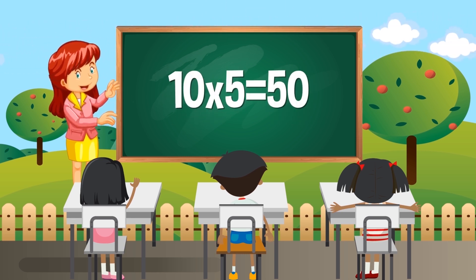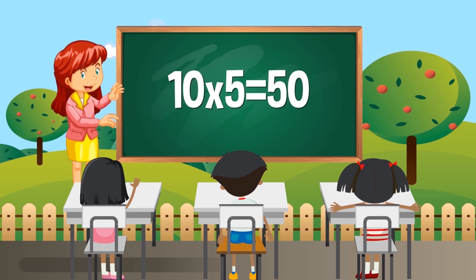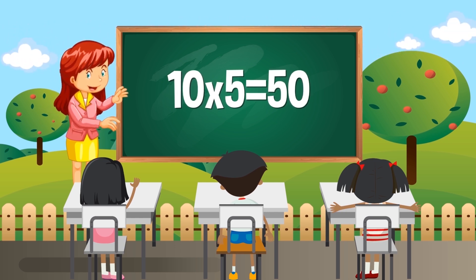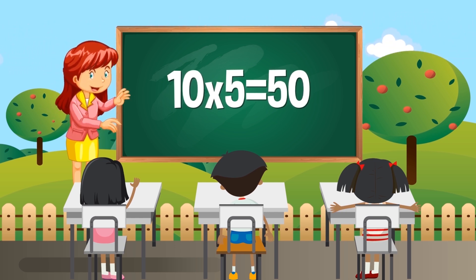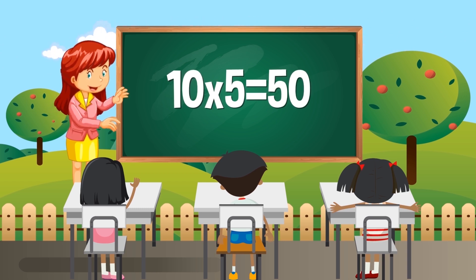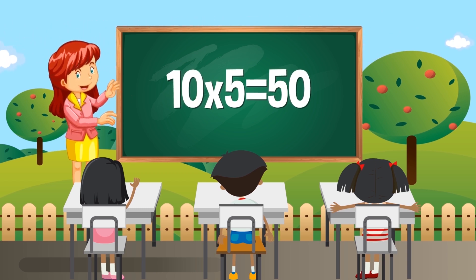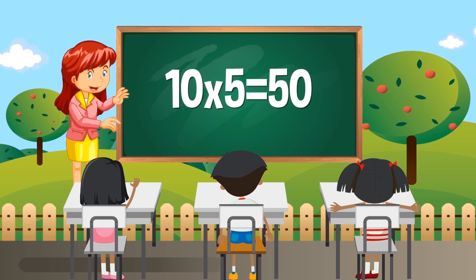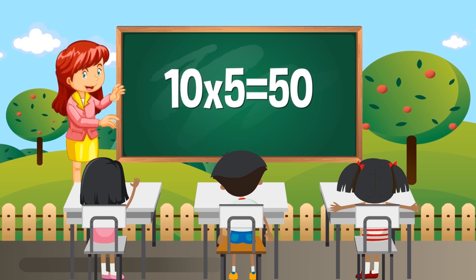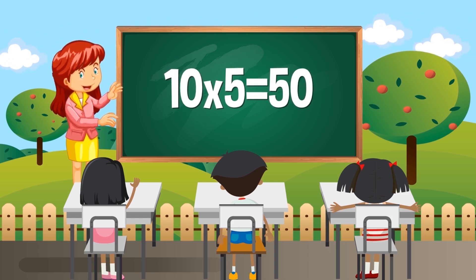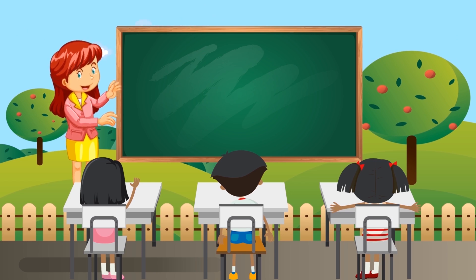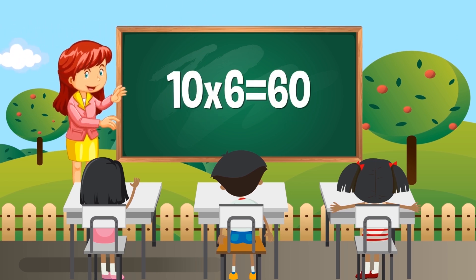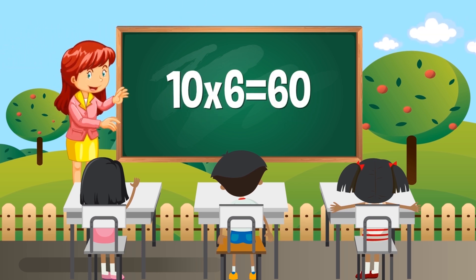Ten times five equals fifty. Ten times six equals sixty.